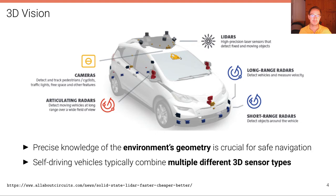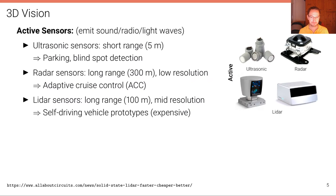Cameras, in contrast to LiDAR and radar, are passive sensors — they don't emit anything and passively perceive the environment. They are typically used to detect pedestrians, cyclists, estimate traffic light state, free space, and other features. A stereo camera takes pictures of the same scene from slightly different angles at the same point in time, allowing 3D estimation.